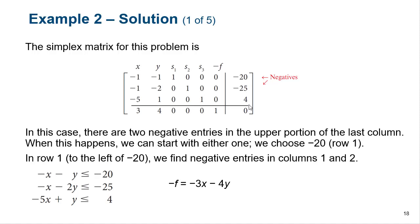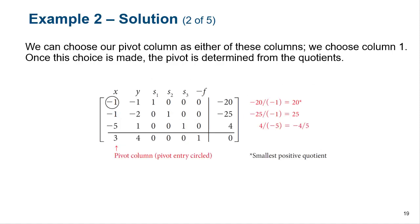Both rows have negatives, so either one will work. We'll go ahead and start with the first one. With negative 20, we have two separate negative numbers in that row, so we can choose either — we'll go ahead and choose the first one and make that our pivot element. We pivot on this: multiply by negative one to make it positive, add it here to make it zero, multiply it by 5 and add it here, and so on.